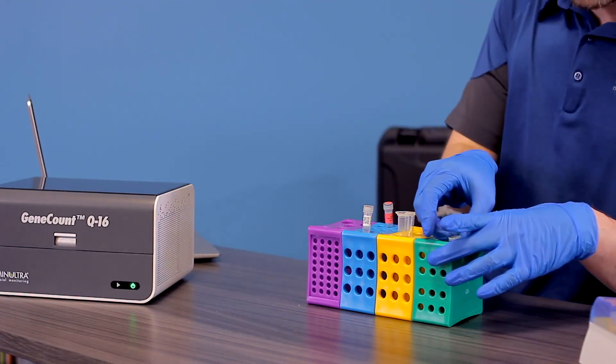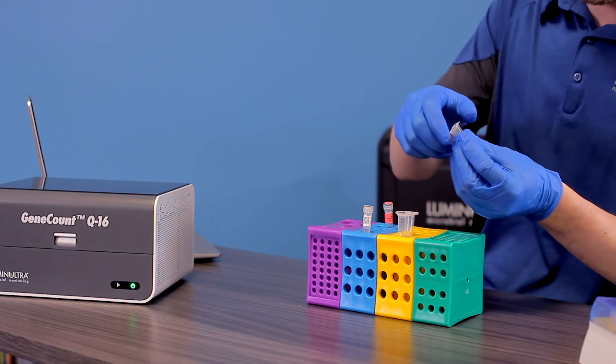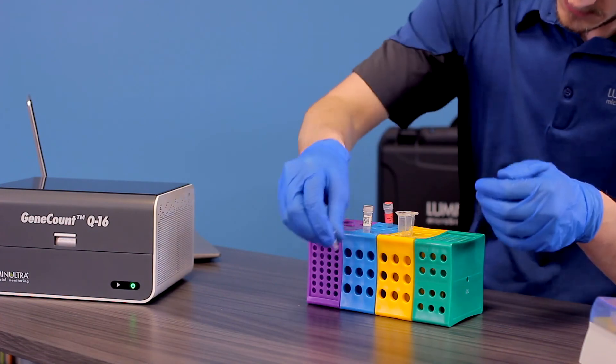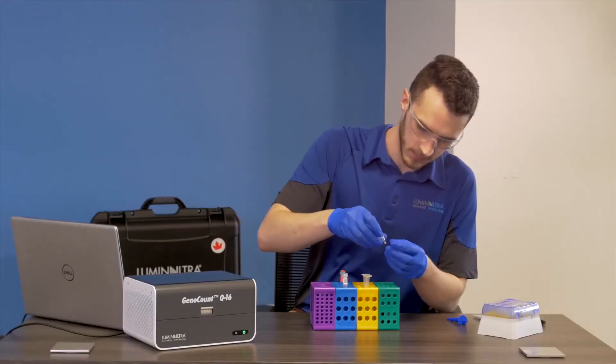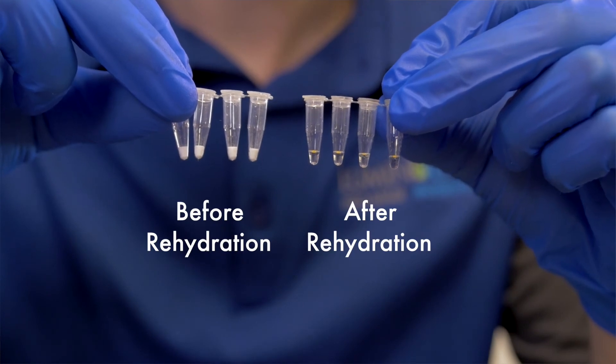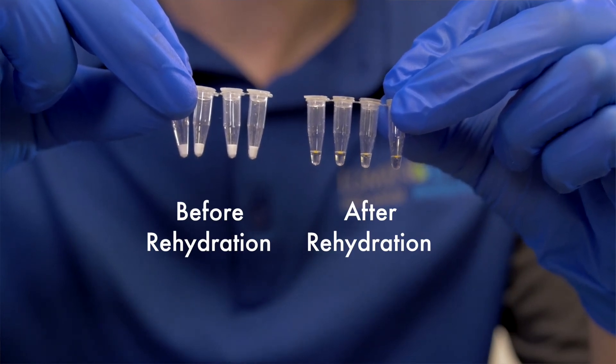Once the samples have incubated for 5 minutes, use a robust downward motion and shake the rehydrated contents of the qPCR tubes to the bottom of the tube. Be careful to note the correct orientation of the tubes to prevent accidentally reversing the tubes when inserting into the qPCR device.